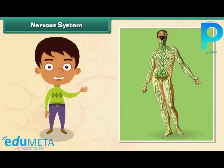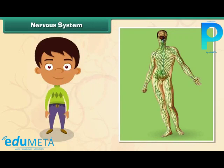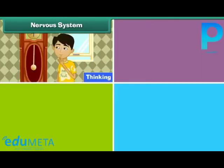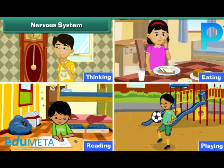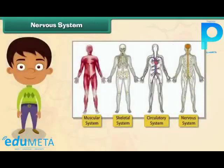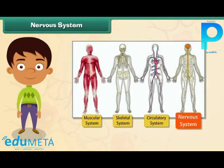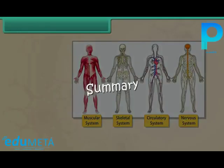The human nervous system consists of the brain and nerves. It controls all physical and mental human activities such as thinking, eating, reading, and playing. All the other organ systems and their functions are controlled by the nervous system.